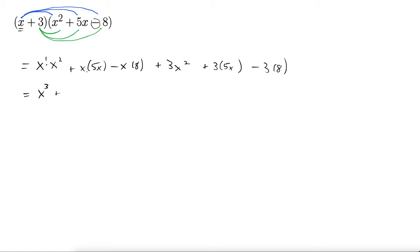Here we go. x times 5x is 5x to the 1 plus 1, which is 5x squared, minus 8x plus 3x squared. Over here we have plus 15x minus 3 times 8 is 24.